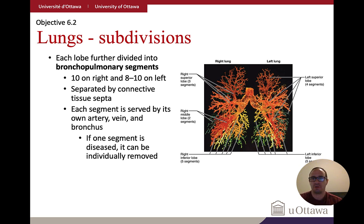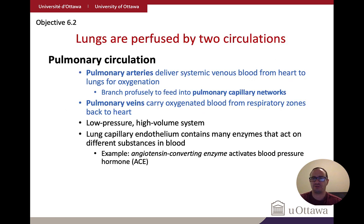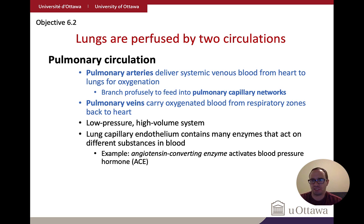The lungs have two types of circulation. Pulmonary circulation, discussed previously with the heart, involves pulmonary arteries moving blood from the heart to the lungs, branching into pulmonary capillary networks, and pulmonary veins carrying oxygenated blood back to the left atrium. This is a low-pressure, high-volume system.